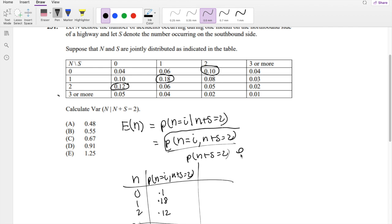Alright, so what is the total probability that n plus s equals 2? We can just figure that out by adding everything up. 0.1 plus 0.18 plus 0.12, which is equal to 0.4.